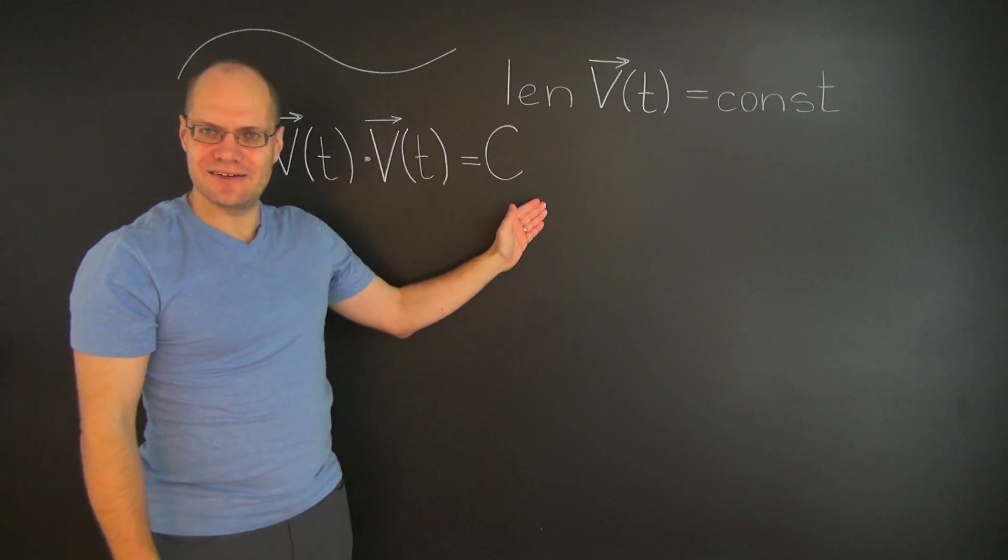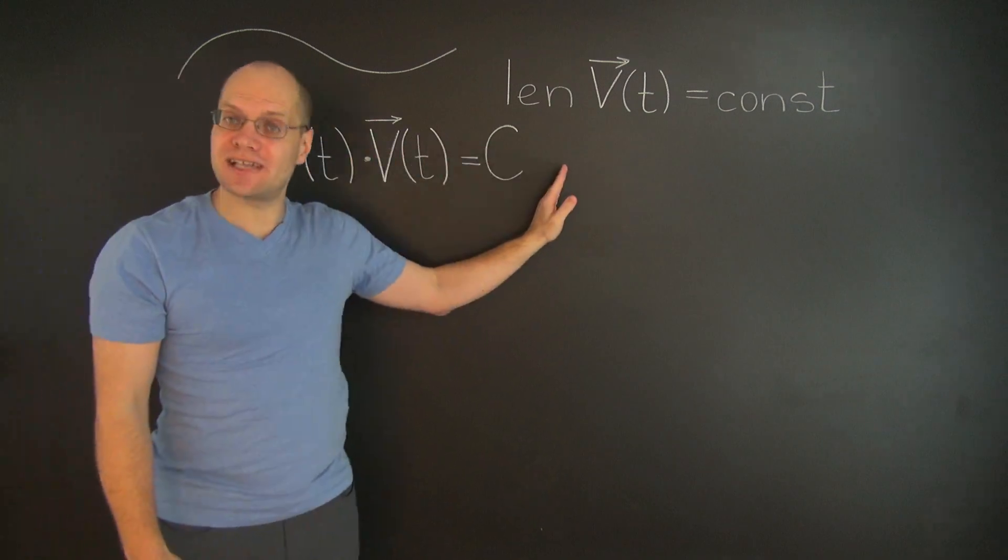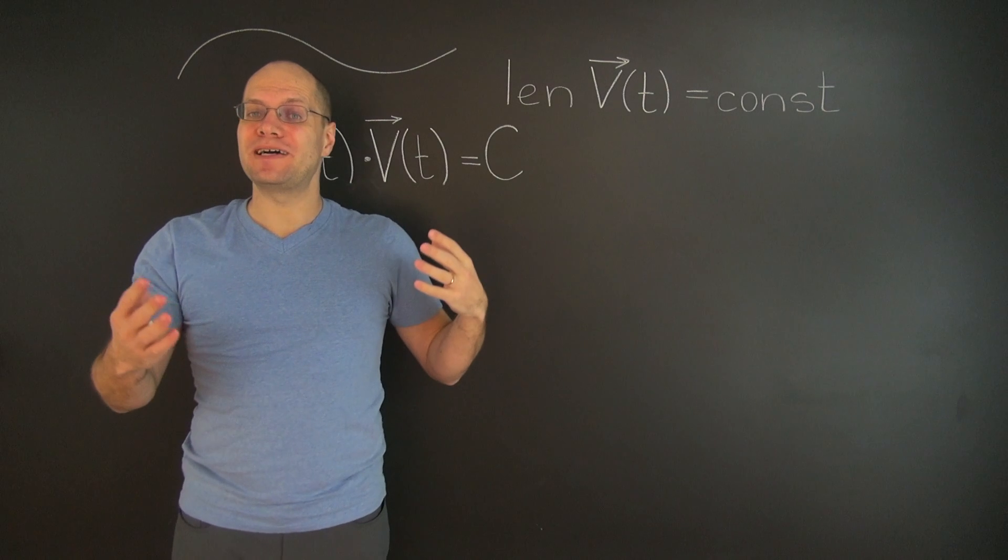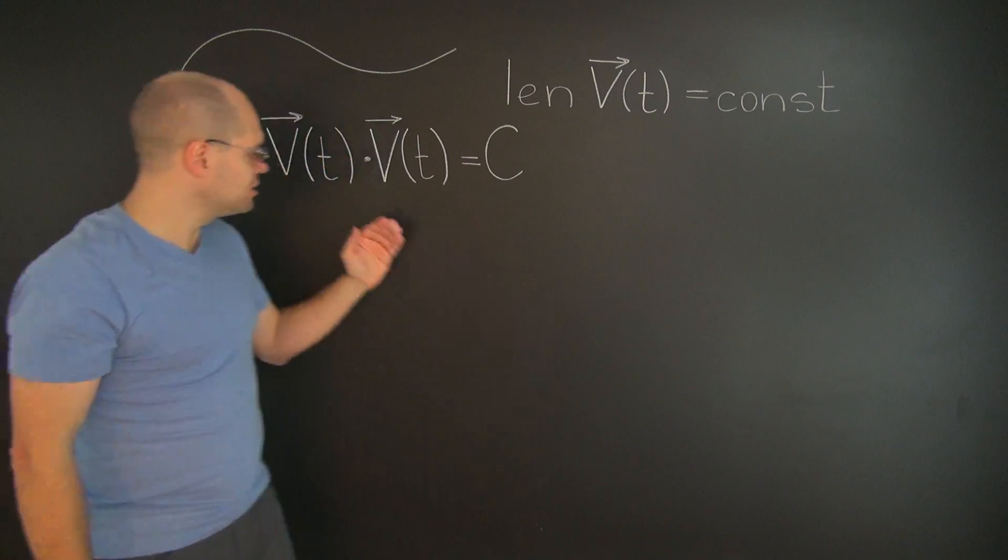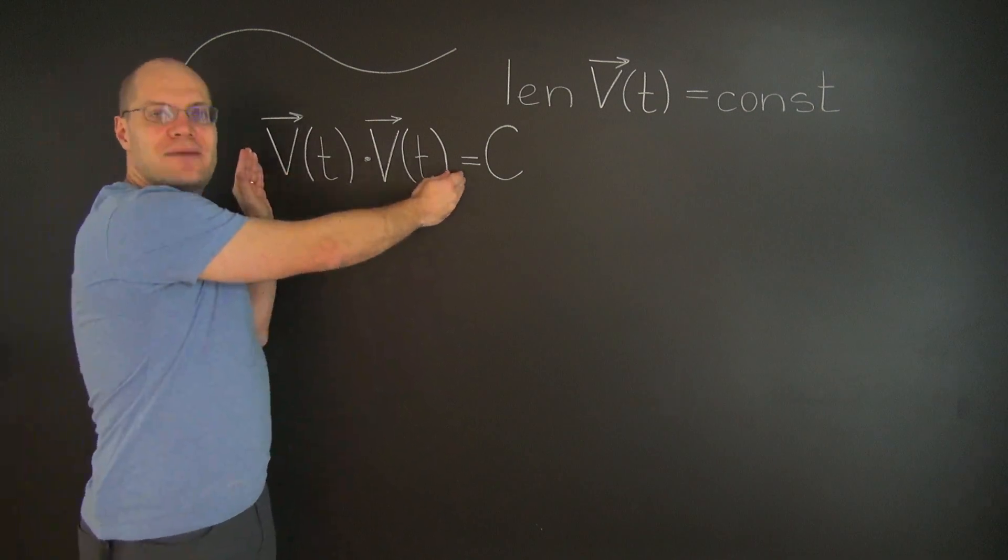All right, so now we have an identity which holds for all values of T. So we can now differentiate both sides of this identity with respect to T. And once again, we will assume that the product rule of differentiation holds for the dot product.